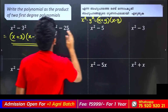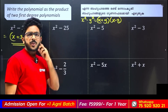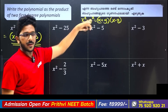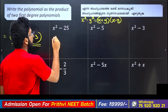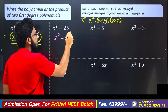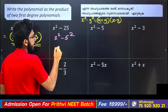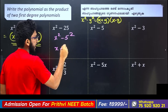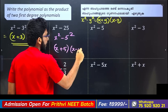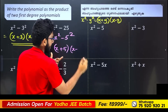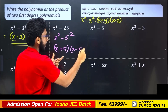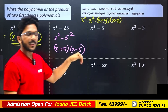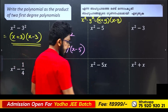Next question: x squared minus 25. Using x squared minus y squared, we write x squared minus 5 squared, which equals x plus 5 into x minus 5. So x squared minus 25 equals x plus 5 into x minus 5. That's the order.